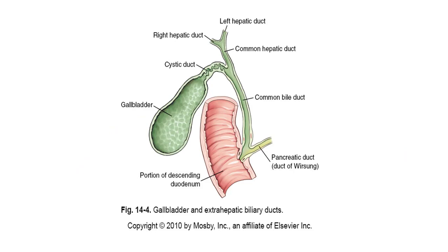Here we see the biliary system, which is composed of the gallbladder and bile ducts, and how it connects with the duodenum. There are two main ducts in the liver — the right hepatic duct and the left hepatic duct. These join to form the common hepatic duct, which unites with the cystic duct to form the common bile duct.